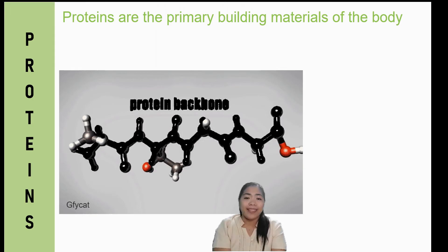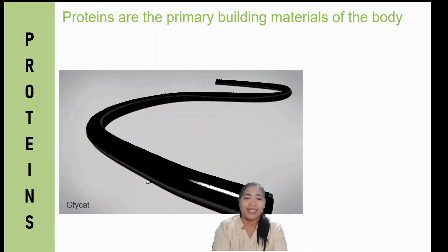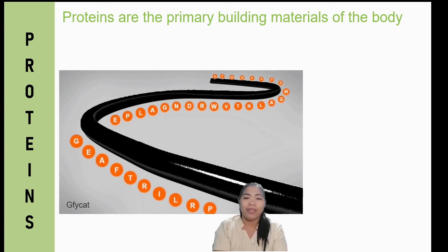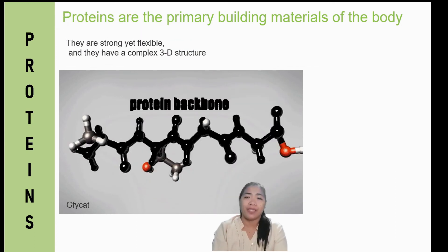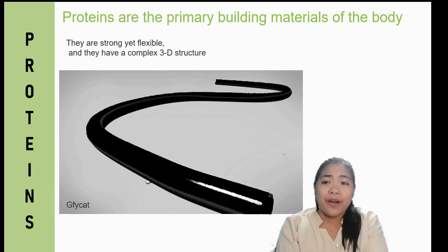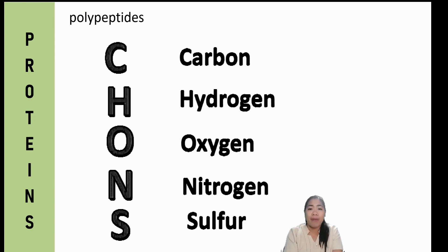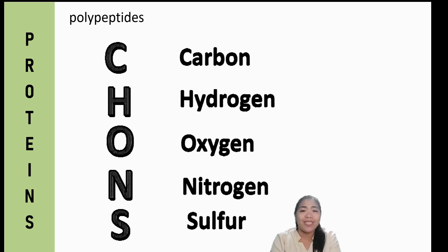The second type of biomolecules are proteins. Proteins are the primary building material of the body. They are strong yet flexible. Proteins are formerly known as polypeptides. They are made up of the elements carbon, hydrogen, oxygen, nitrogen, and sulfur.